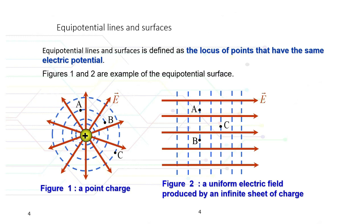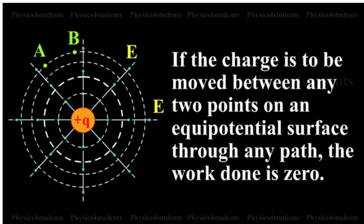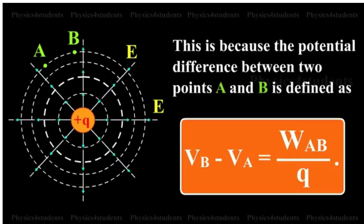Since points A and B are located at the same equipotential line, they have the same potential, but point C has a lower potential compared to points A and B. If a charge is to be moved between any two points on an equipotential surface via any path, the work done is zero. This is because the potential difference between two points A and B is defined as Vb minus Va, which equals the work from A to B divided by q.